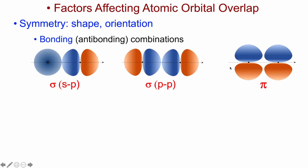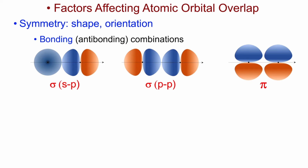Symmetry is also important for pi overlaps. Pi bonding results from what you might call a side-by-side overlap of two p orbitals. As these two p orbitals on different atoms overlap with the orientations shown, they will overlap constructively in both lobes, and the result will be a bonding, more stable pi molecular orbital. I could then flip the orientation or phase of one of the pair, and I get the corresponding out-of-phase overlaps and the anti-bonding molecular orbital.